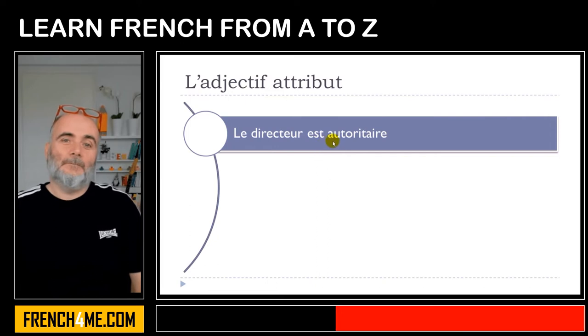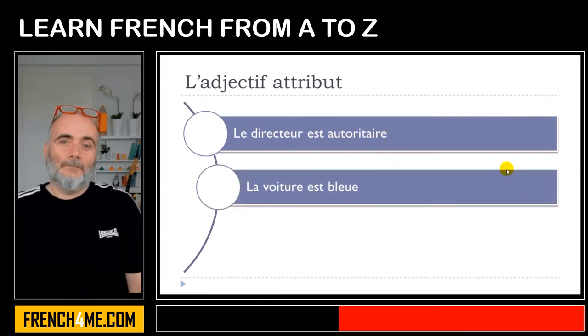Let's take a few more examples: le directeur est autoritaire. La voiture est bleue.